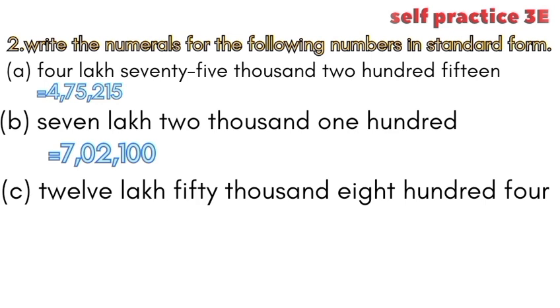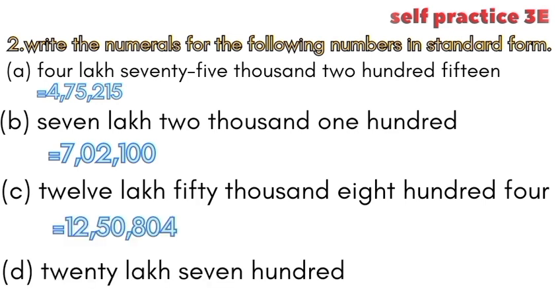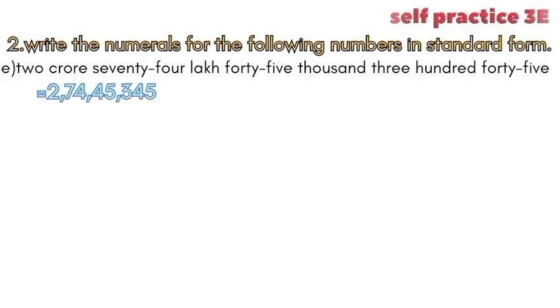B. seven lakh two thousand one hundred: 7,02,100. C. twelve lakh fifty thousand eight hundred four: 12,50,804. D. twenty lakh seven hundred: 20,00,700.